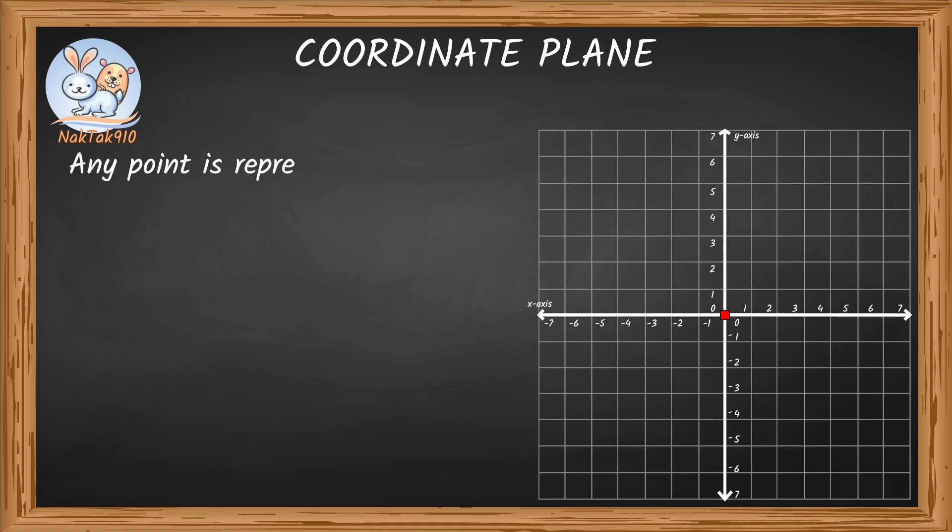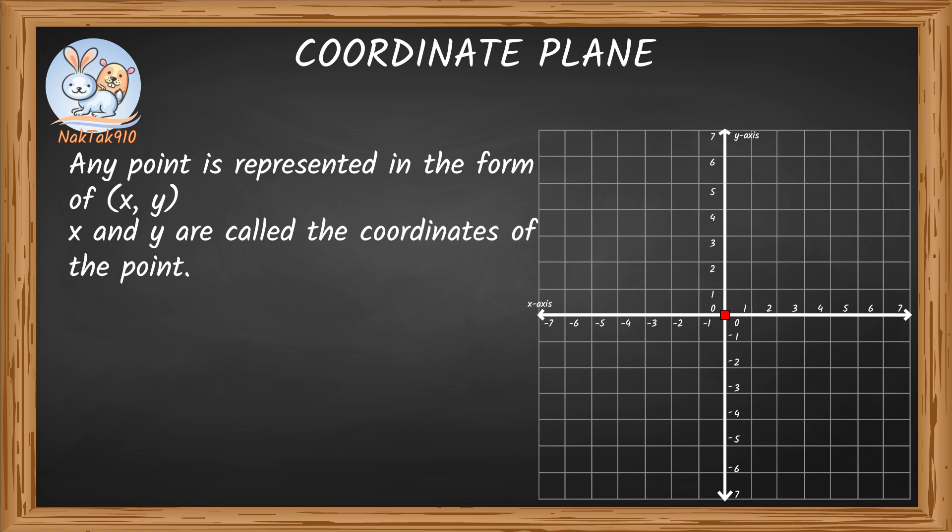Any point is represented in the form of x and y. What are these x and y? These x and y are called the coordinates of the point.